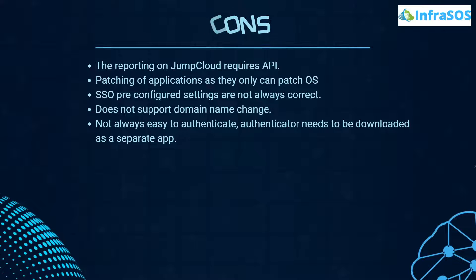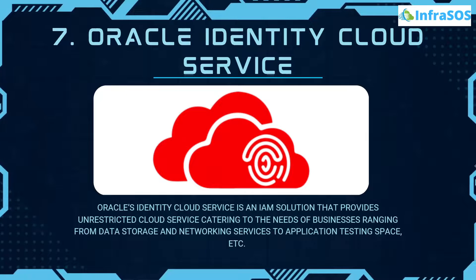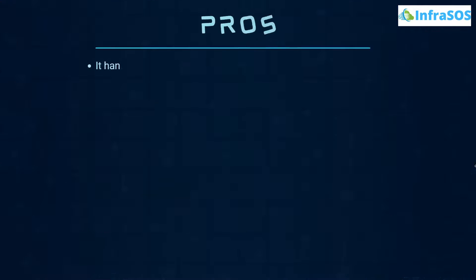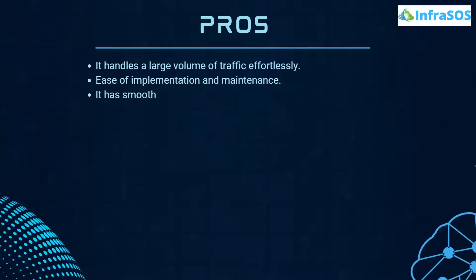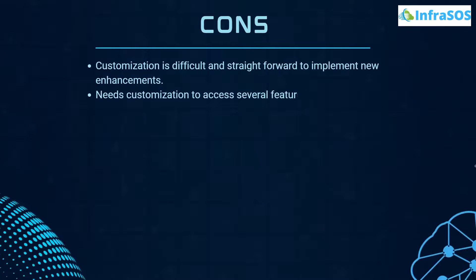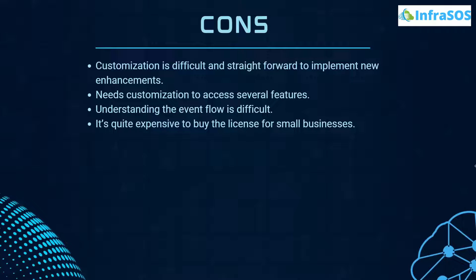At number 7 we have Oracle Identity Cloud Service, an IAM solution that provides unrestricted cloud service catering to the needs of businesses ranging from data storage and network services to application testing and more. Pros include handling a large volume of traffic effortlessly, ease of implementation and maintenance, smooth user provisioning and reconciliation, and the ability to automate access management. Cons include that customization is really difficult, you need customization to access several features, and understanding the event flow is also quite difficult.